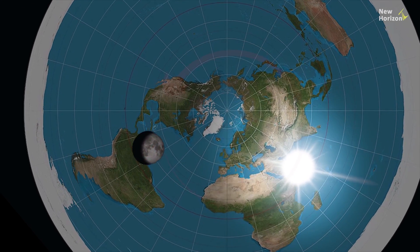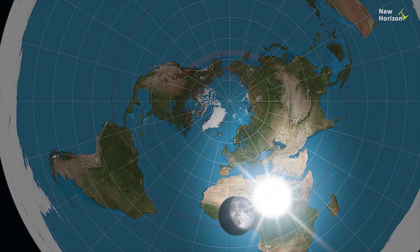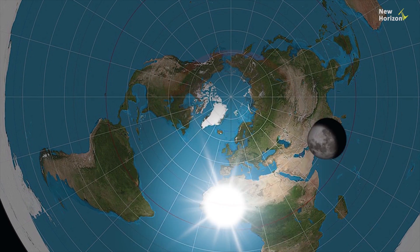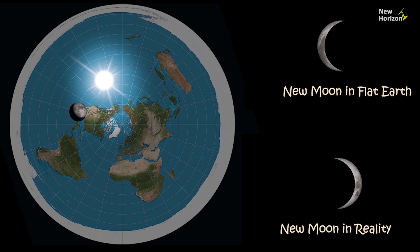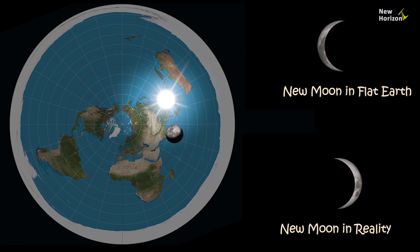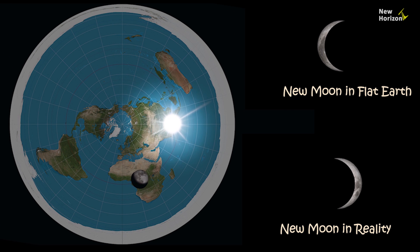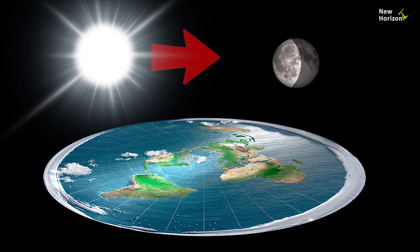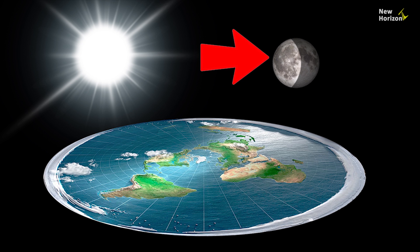If we keep the moon's direction the same, its phases wouldn't match the real moon phases. In both cases, we wouldn't be able to see the full moon from the Earth's surface.